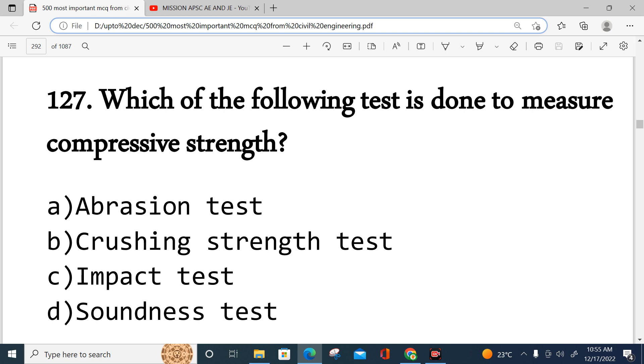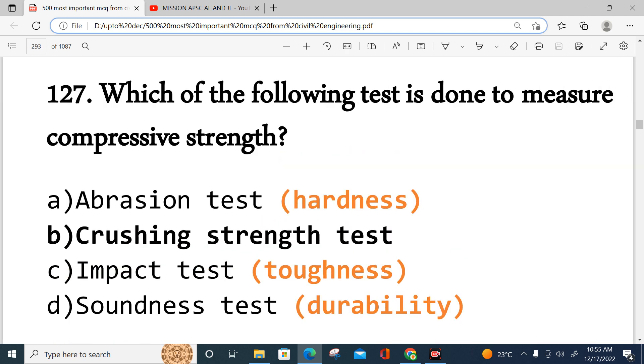Compressive strength test is used for the hardness, crushing strength is basically used for crushing strength of the concrete. Impact test is used for toughness, so if you want to measure toughness, the answer will be impact test. Sound test is basically used for durability, so compressive strength is related to crushing strength. Option B, to determine compressive strength measurement, the crushing strength test is used.